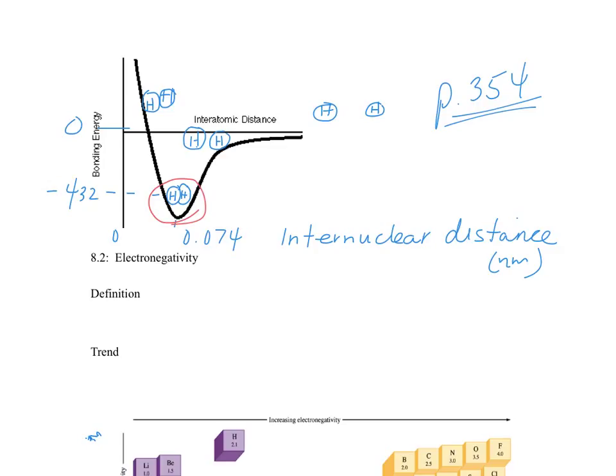This distance right here represents the H-H bond length. The bond length is the distance at which the system has minimum energy. And that is what we are interested in.